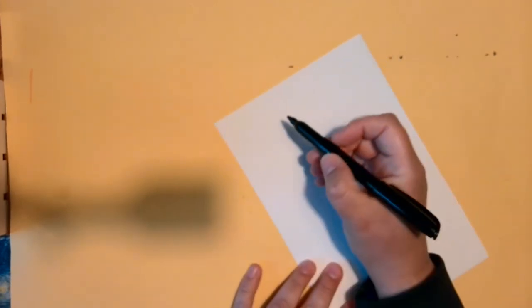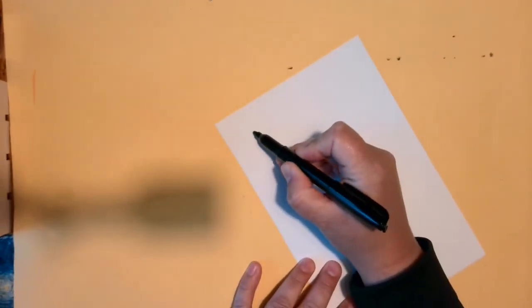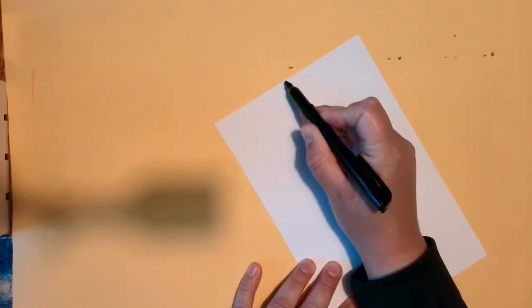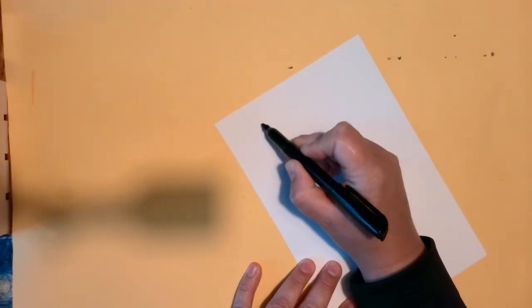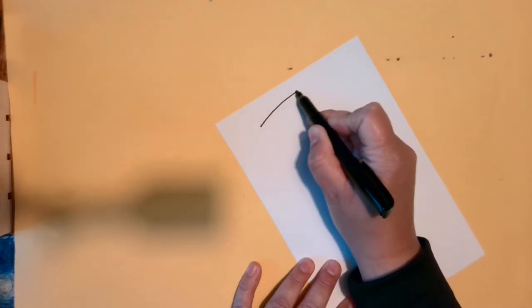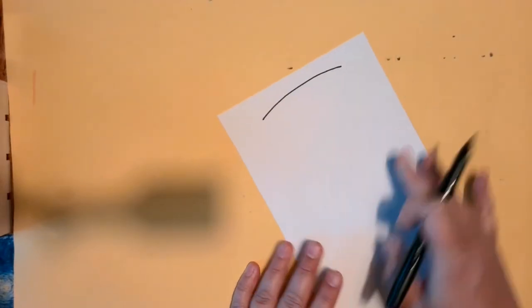Towards the top of my page, I'm going to make a line that curves across. Now, I don't want to be right up at the top, because then I won't have room for his ears. So, I'm going to come down just a little bit, and I'm going to make my line, and it just curves just a little bit.